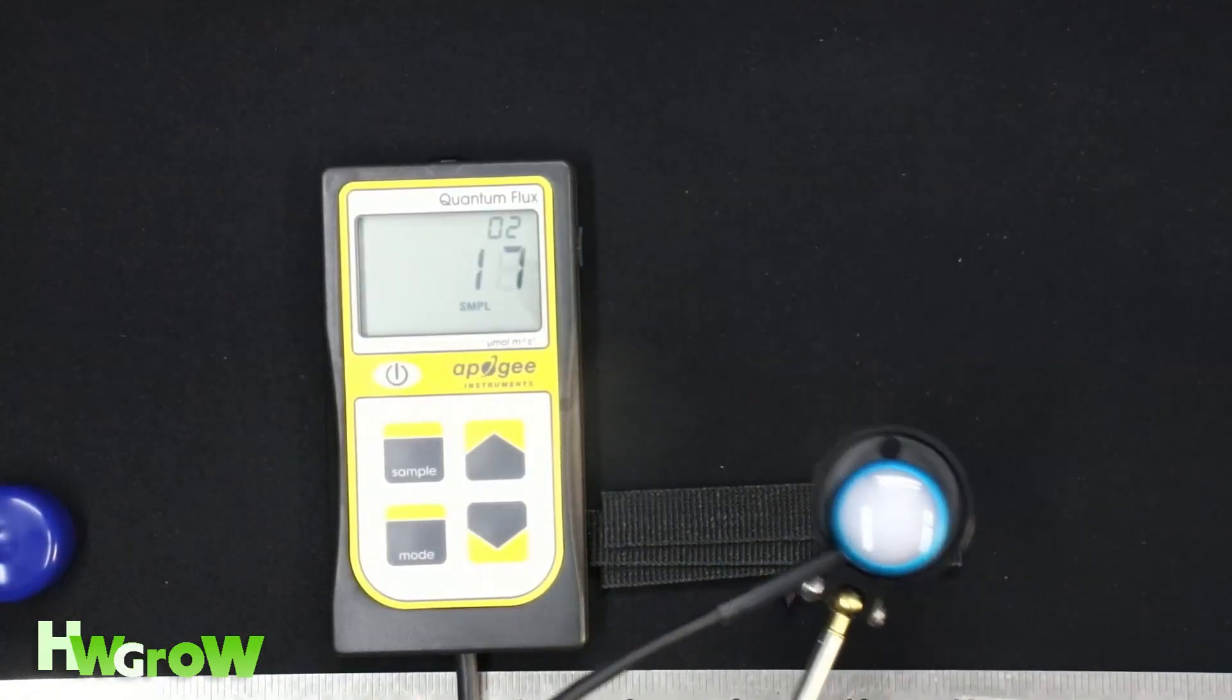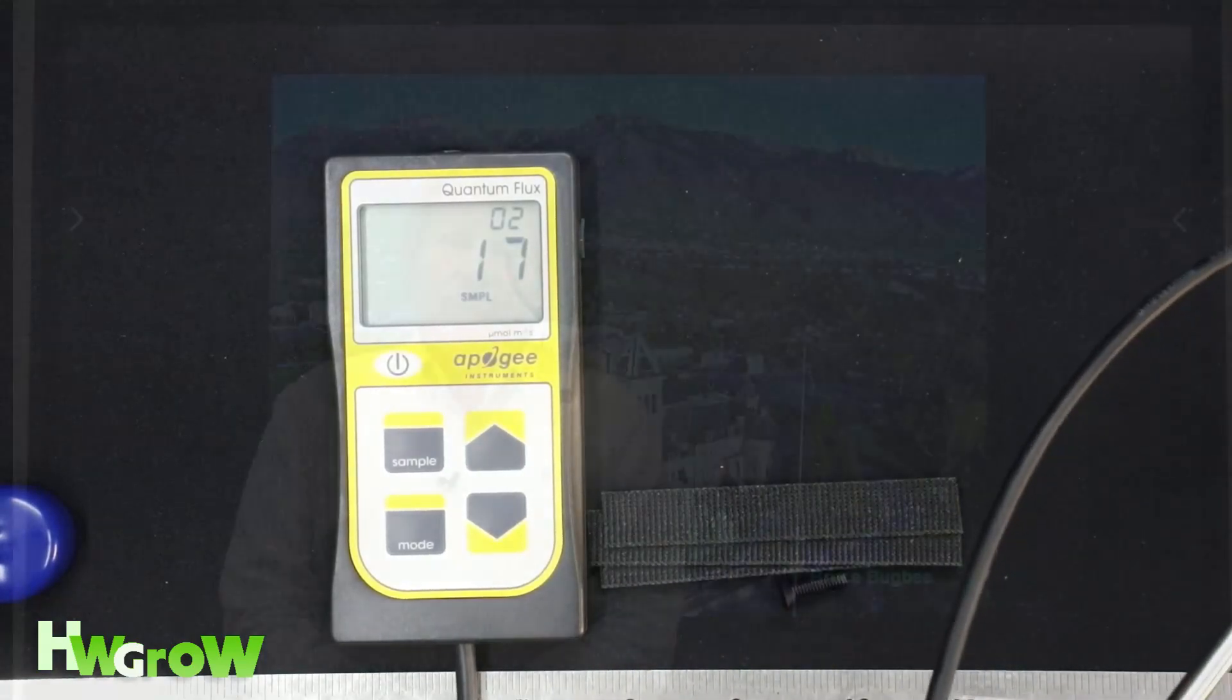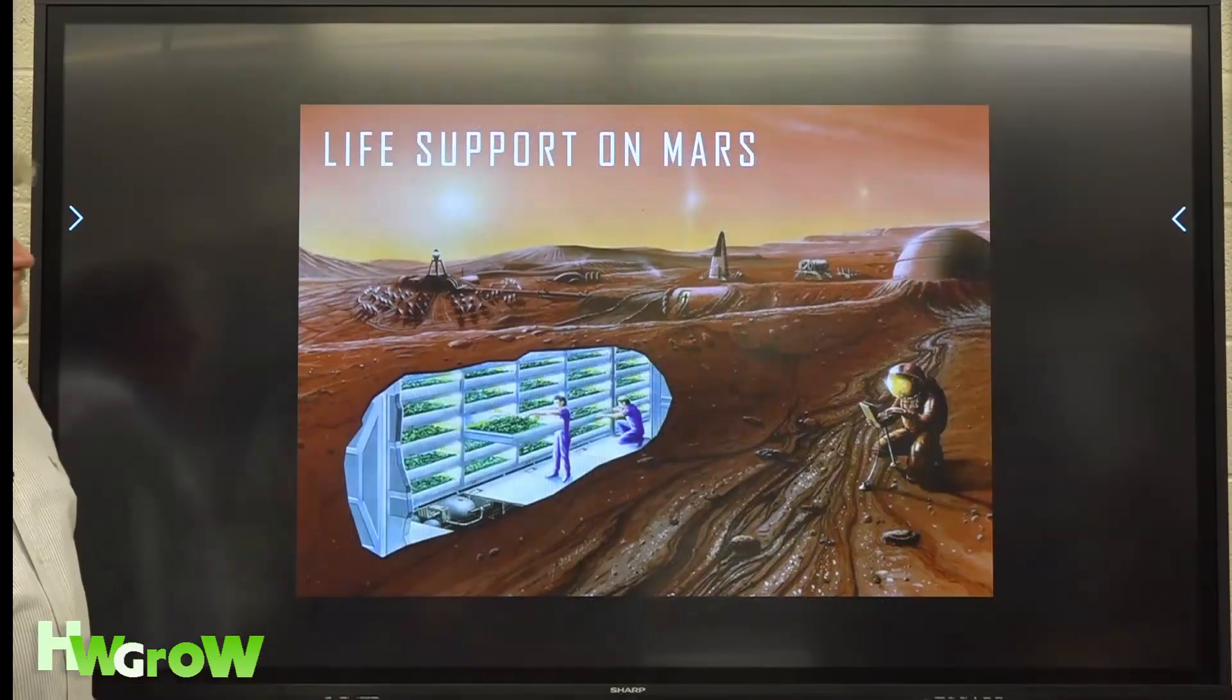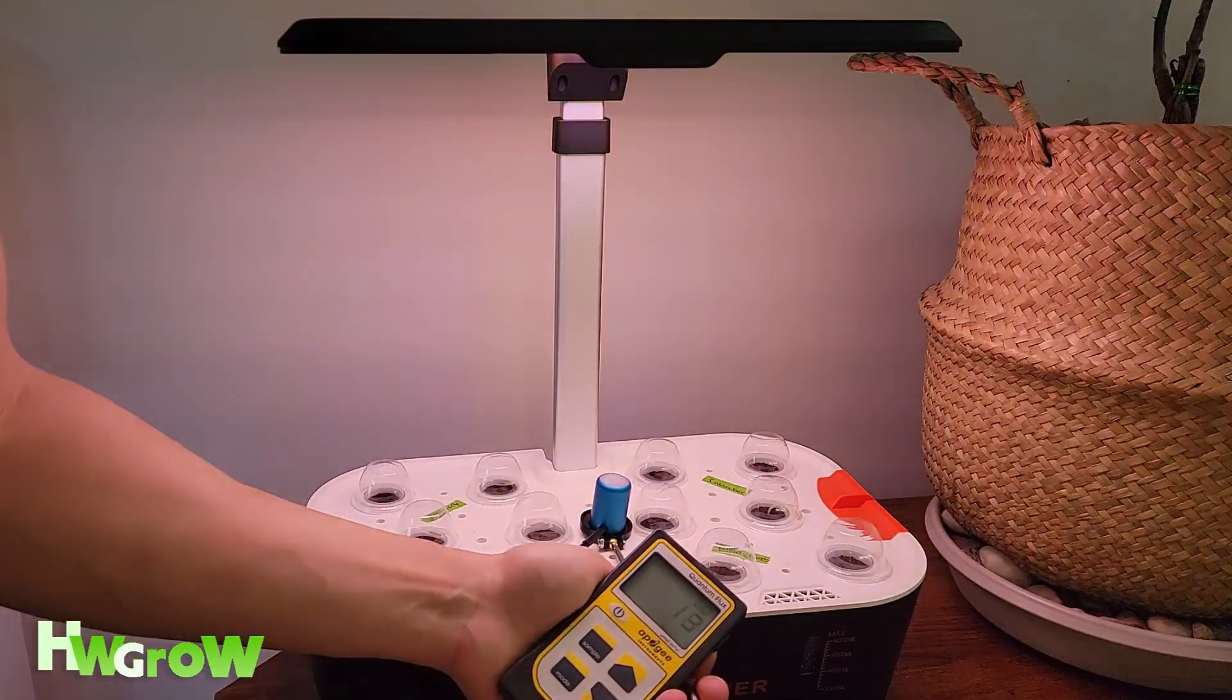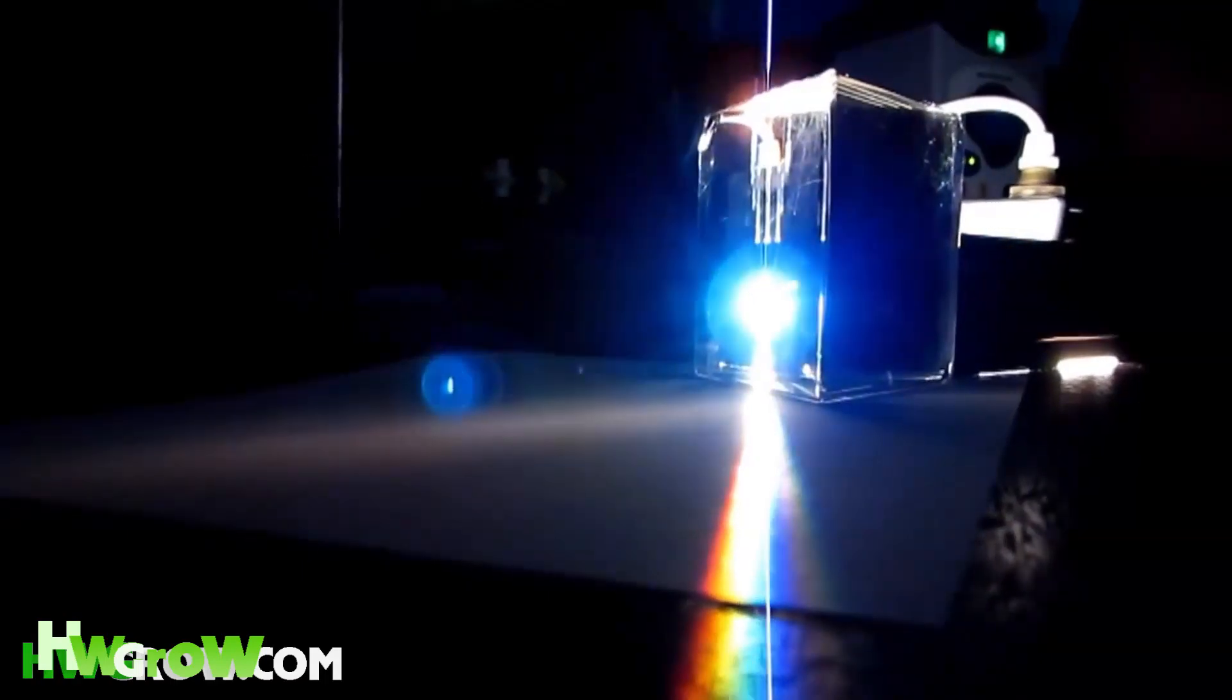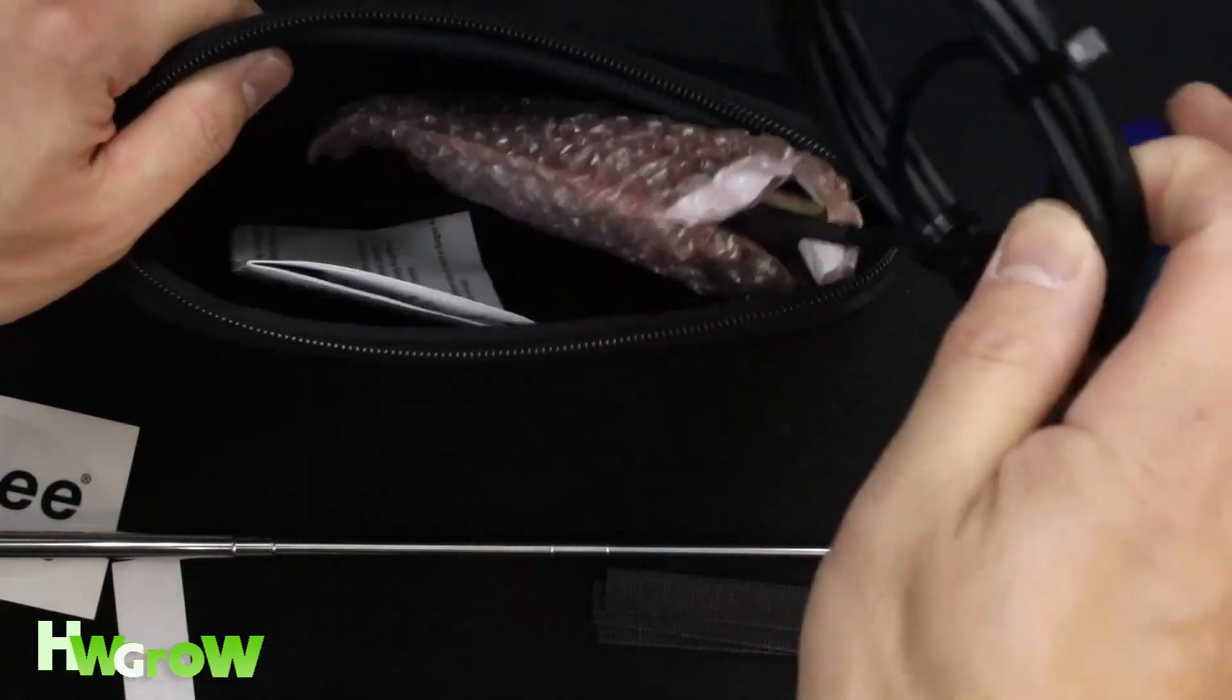It's a full-spectrum quantum par meter that was designed by NASA scientist Dr. Bruce Bugbee, whose projects include figuring out how to grow plants on Mars. This device measures light intensity in the range of 400 to 700 nanometers, which is the best spectrum of lighting for photosynthesis.